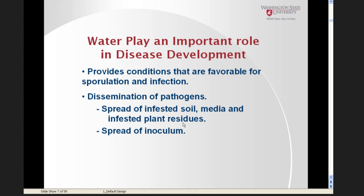Water plays an important role in disease development. It provides conditions favorable for sporulation and infection for many diseases, and is also important for the dissemination of pathogens. Examples include the spread of infested soil or media and infested plant residues by surface water running over a field, moving inoculum in soil along with the water, and also potentially disseminating pathogen inoculum directly by disseminating spores.